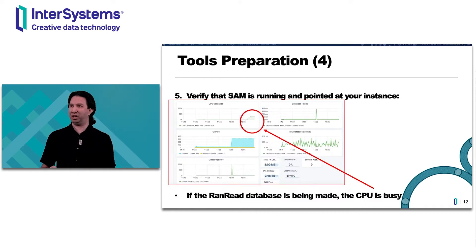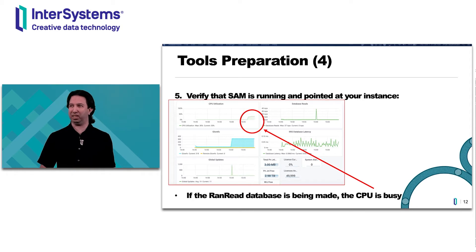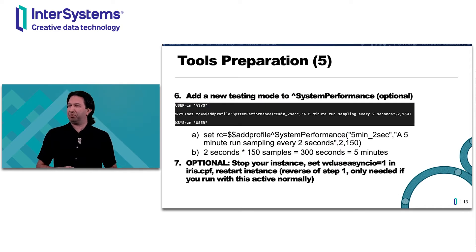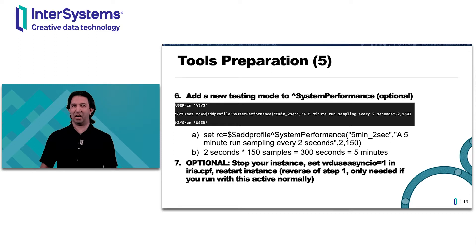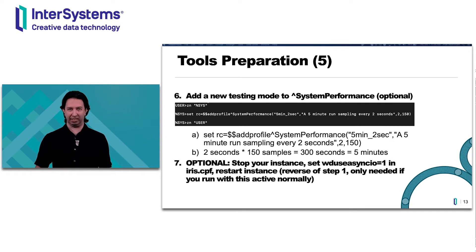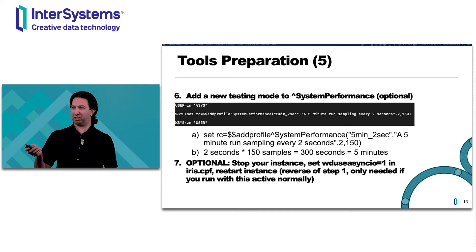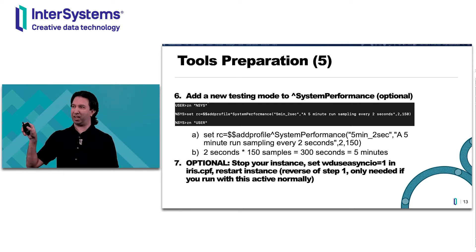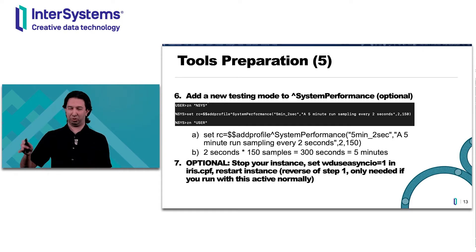You can see that it's creating the database if you look at it in SAM — the CPU will be active while it's building. The final preparation is to make a testing mode in System Performance. This is optional since there are already five or six built in, but you want one with good granularity every one to three seconds. Here's the command to create a profile for a five-minute run, sampling every two seconds. It's two seconds times 150 iterations, which equals 300 seconds or five minutes — don't try to put in something like two comma five.